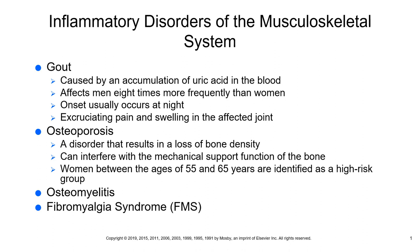A diet that is rich in purines can increase uric acid levels in the body, and that's going to lead to gout. Uric acid is typically excreted in the urine, but in some people those levels go extremely high and it's not metabolized correctly, so the uric acid starts to climb in their bloodstream.